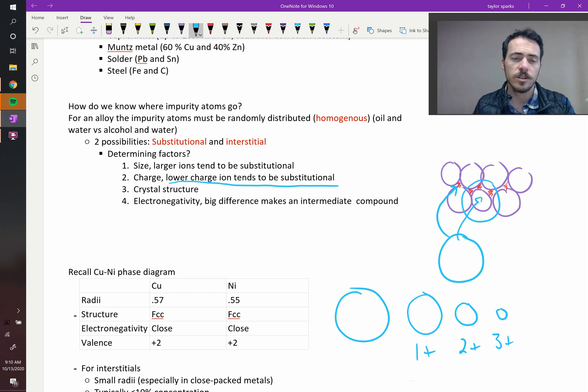Crystal structure: basically if it has a really open crystal structure, then the odds of it having big interstitials is larger, and so you're more likely to end up with interstitial sites. If it's a really close packed structure, it's going to be harder to put those in the interstitial sites.